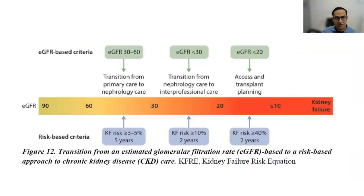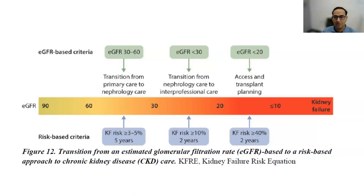Our goal is to switch from eGFR thresholds of 30–60, less than 30, and less than 20 — used for transition from primary care to nephrology, nephrology to multidisciplinary care, and access and transplant planning — to risk-based cutoffs of 3–5%, greater than 10%, and greater than 40%. So we're moving from eGFR-based care to risk-based care.